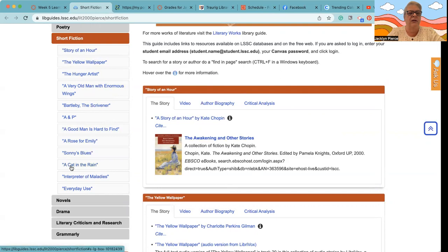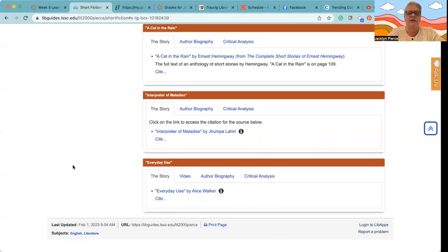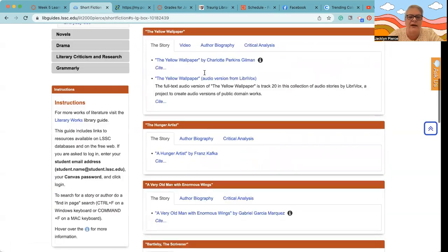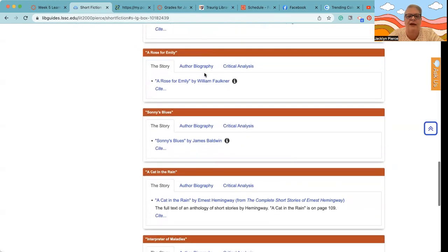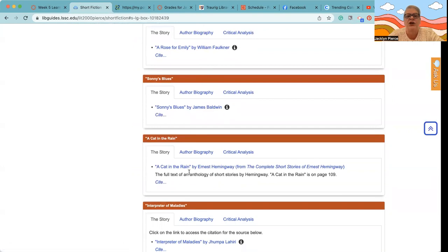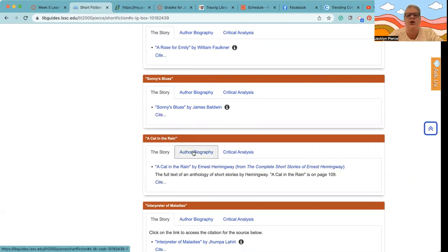All the short fiction is really on one page and you can go directly to the one you need. Let me go to the furthest one down. Let's click on Cat in the Rain. It will take us directly to that box, but all we had to do was scroll back up, so it's really all on the same page. You have the story here.